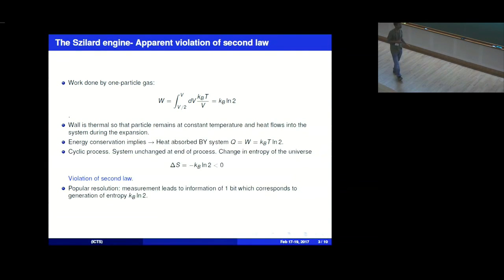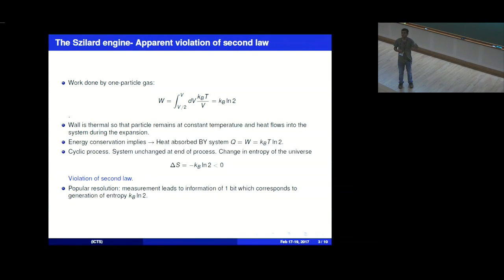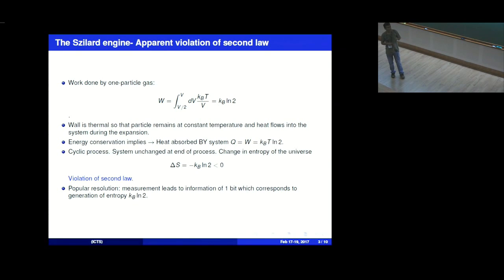So this is the paradox — a thought experiment leading to a paradox. A popular resolution is that the measurement process leads to gaining one bit of information, and this corresponds to a generation of entropy KB log 2. Therefore you have also generated some entropy, so the total change in entropy is zero or greater than zero. That's the popular resolution of the paradox.